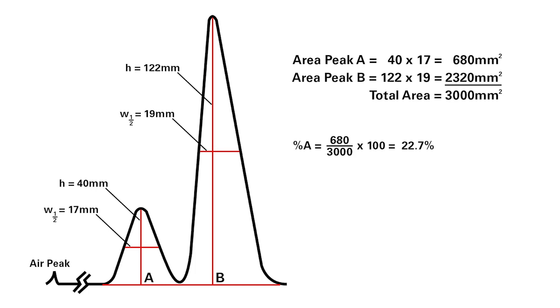The percentage of compound A in the mixture is 680 divided by 3,000 times 100%, which comes out to 22.7%.